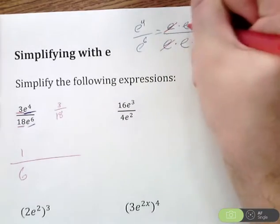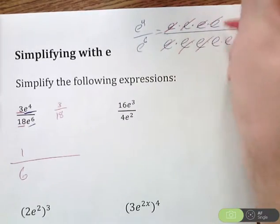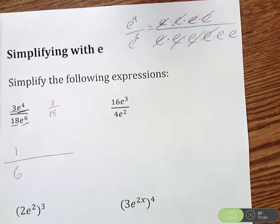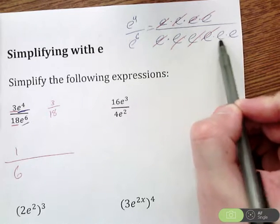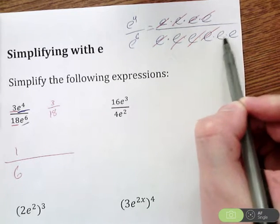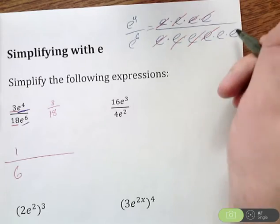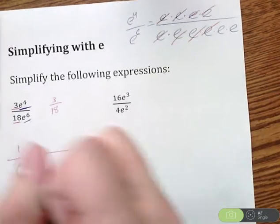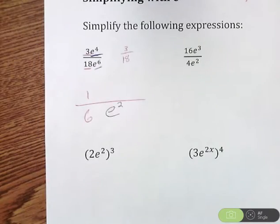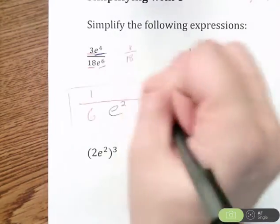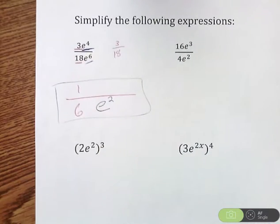So when I divide out as much as I can, there's no more e's left on top, but I have e times e on bottom. e times e is e squared. But look again, that's on the bottom. So your answer there is 1 divided by 6e squared.